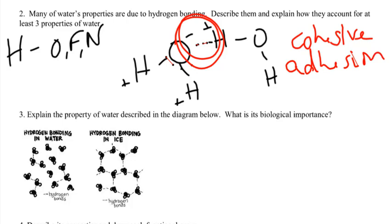First, adhesion. Adhesion is, because of these charges, the negative and the positive, water is going to like other molecules. So cohesion is when it likes itself. Adhesion is when it likes other things. Because there's so much attraction between the molecules, it has a high specific heat.